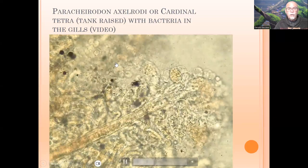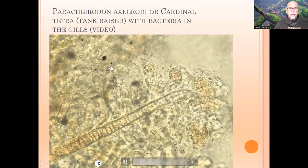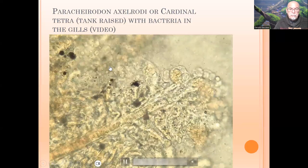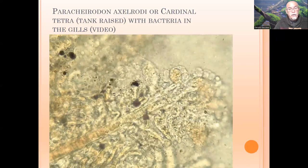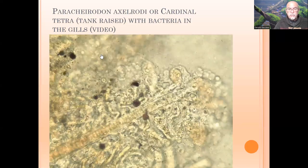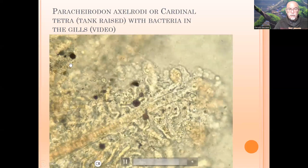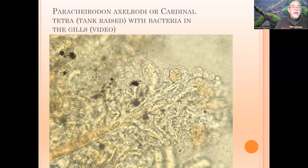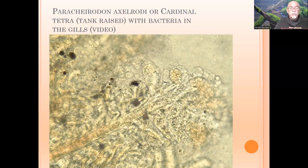We see one little organism moving here. That might have been a flagellate, maybe a parasite. But if it's only one, it's not an infection. That is common in damaged tissue, because here the tissue is damaged by the bacteria. And then you can have some invaders — not particularly parasites, but other little animals, protozoa, that move into the affected tissue.